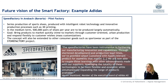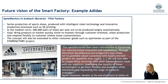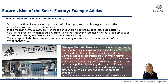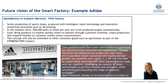In the medium term, 500,000 pairs of shoes per year are to be produced largely automatically. The final goal is to bring products to market quickly, meaning a decrease in time-to-market through customer-oriented urban production and flexible response to customer wishes. The concept will also be extended to other consumer goods, such as sportswear, as part of the store factory project. In 2019, Adidas decided to relocate the speed factory from Ansbach to Atlanta, USA, and to Asian markets, meaning the factory in Ansbach was closed in 2020.